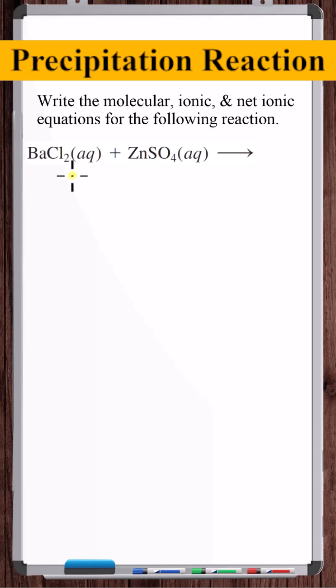For the molecular equation, we leave everything in compound form and just put either aqueous or, if it's a precipitate, solid or liquid. Mixing up the ions, we have barium sulfate, which is Ba2 plus SO4 2 minus, so its compound as a formula is BaSO4.